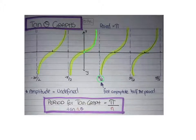You can see that the cycle keeps repeating, but it only takes π to complete a complete cycle. So the period of a tan graph is actually π for a basic tan graph.